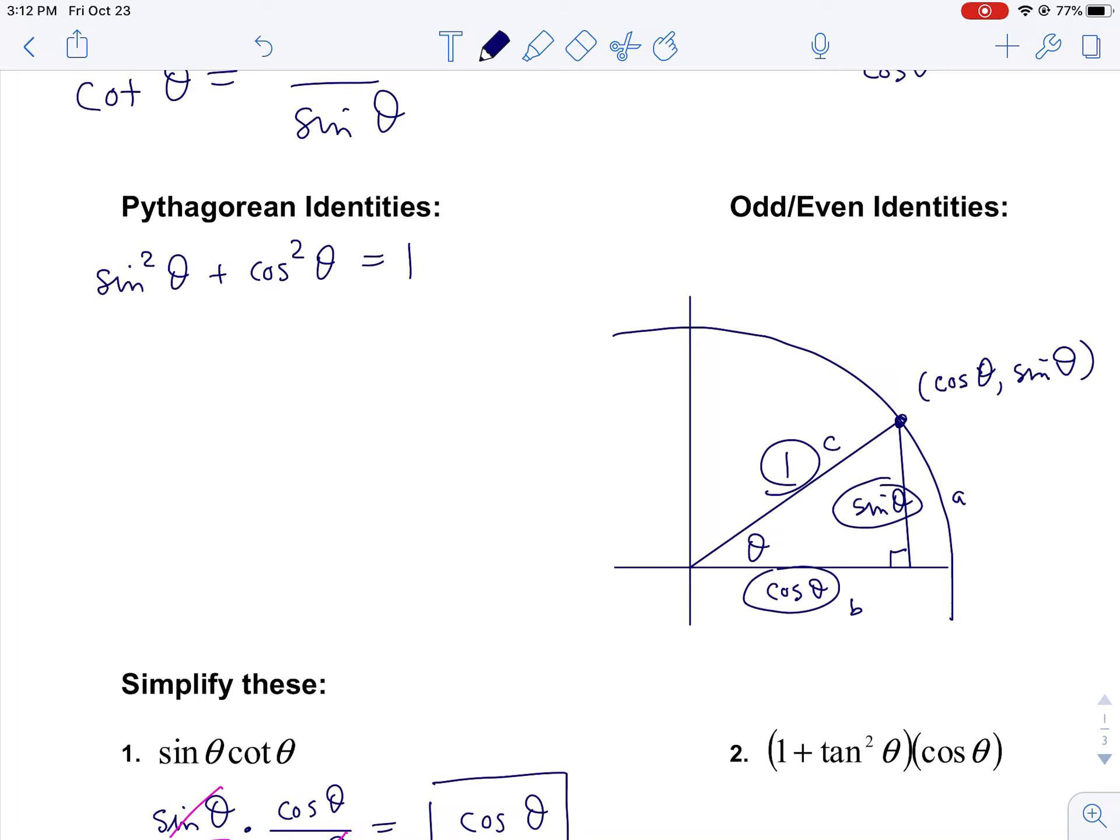So that was just a quick geometric proof of the Pythagorean identities. I'll tell you what, I think we'll stop this video here. We'll pick it up with...